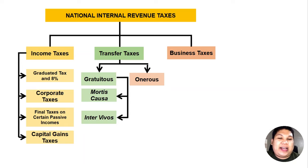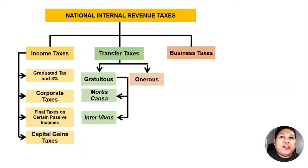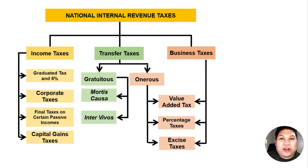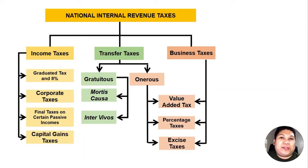Onerous transfers involve the transferee compensating the transferor for the property received — there is a burden on the part of the transferee. These onerous transfers are actually subject to business tax, which is our third major classification, and this could be value-added tax, percentage taxes, or excise taxes.